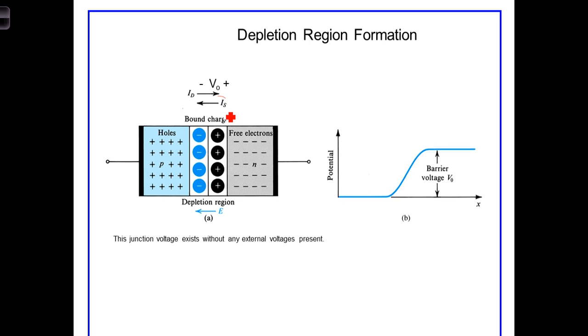This process continues until an equilibrium is reached, where the diffusion current I-sub-D equals the drift current I-sub-S.